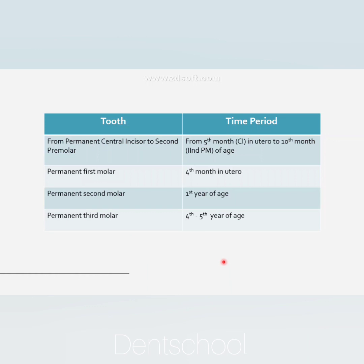Here we have the time period for the development of various teeth. First, the permanent central incisor to the second premolar—the succedaneous teeth—develop from the lingual extension of the dental lamina between the fifth month in utero to the tenth month of age.